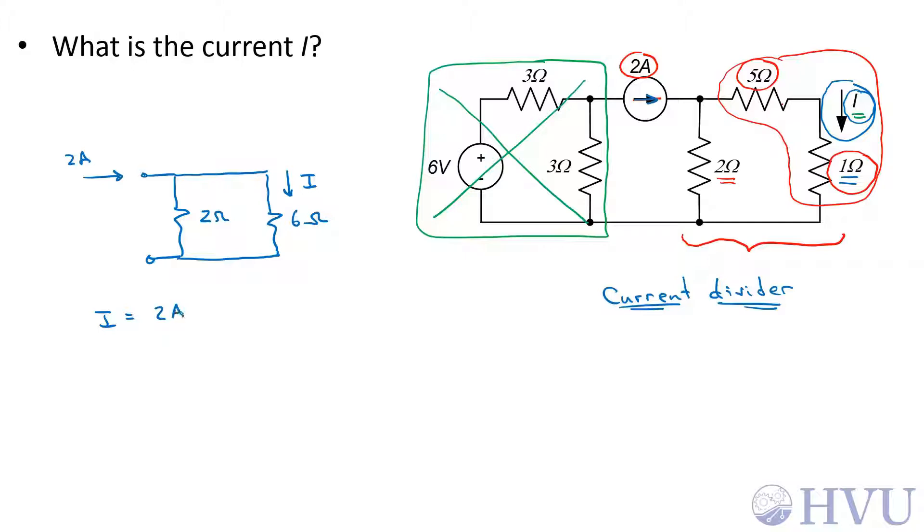I is equal to the total current 2 amps times the other resistance 2 ohms over the sum of the two resistances 2 ohms plus 6 ohms. 2 over 8 is 1 quarter, 2 amps times 1 quarter is 0.5 amps.